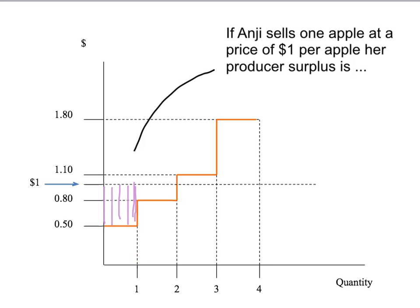So Anji's producer surplus is given by this purple shaded area here, which is simply a dollar — the price she receives — minus 50 cents, her opportunity cost, on that one apple. Her producer surplus is 50 cents. Notice that even though Anji would like to sell two apples, if she's only able to sell one, she only makes producer surplus on the one apple she actually sells. You can only make producer surplus on something that you actually trade, that you actually sell. The fact that she would like to sell a second apple but isn't allowed to is irrelevant. Her producer surplus is the area under the price, above the supply curve, up to the quantity she actually sells — not the quantity she would like to sell.